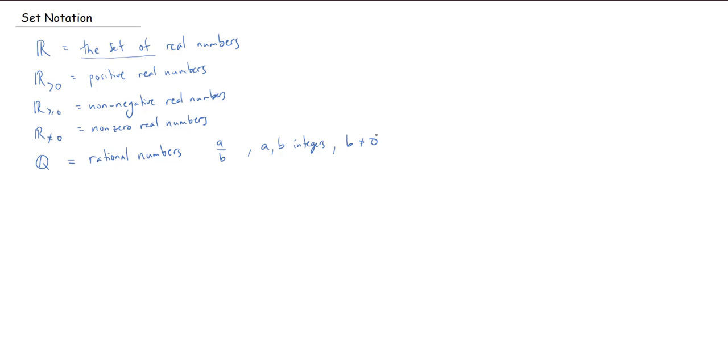Speaking of integers, we want to have a symbol for that. So, we're going to use the blackboard Z. Z is for Zollen, which is German for number. So, these are the integers. When we say integers, we're talking about zero, and one, and minus one, and two, and minus two, and three, and minus three, and so forth.